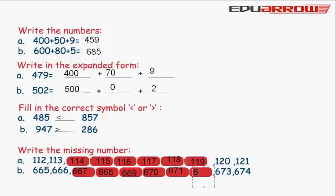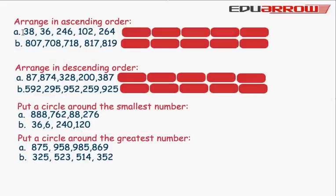673, 674. Arrange in ascending order. First we write the smallest number and in the last we write the greatest number.